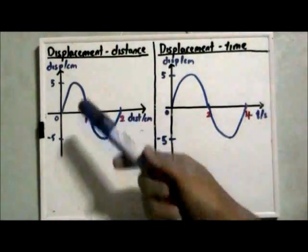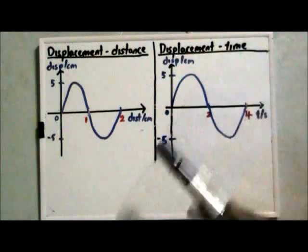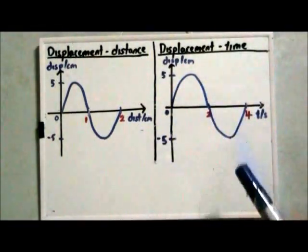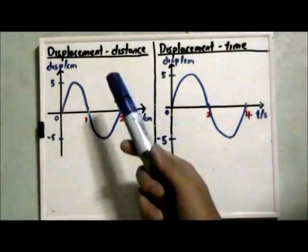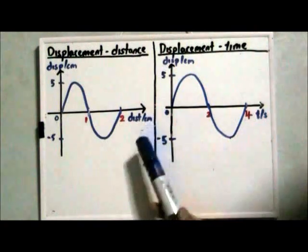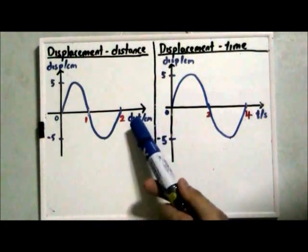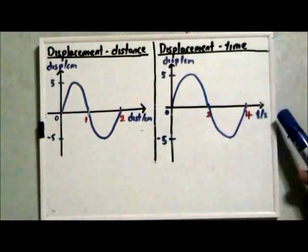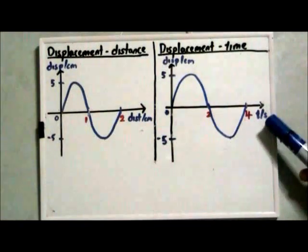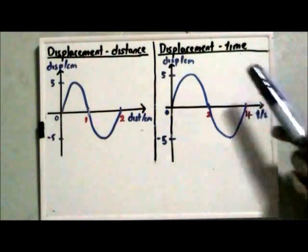As we can see, the two shapes look the same. So how do we differentiate between these two graphs? We look at the X axis. The X axis for the displacement-distance graph is in terms of distance, and the X axis for displacement-time graph is in terms of time. This is how we differentiate them.